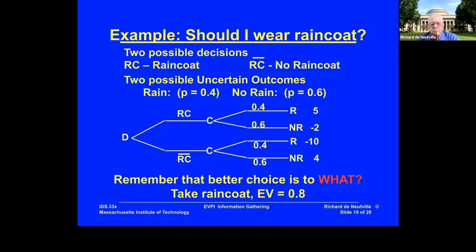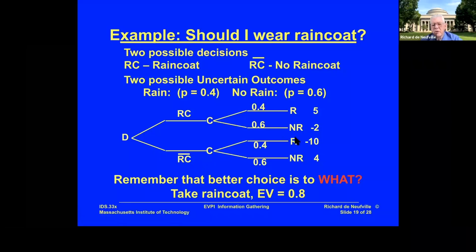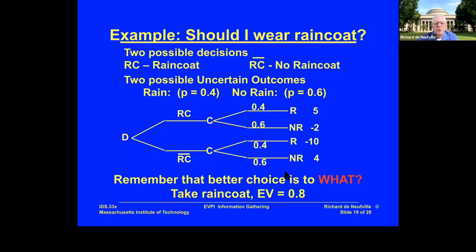Just to set ourselves back in context: what is the better choice? If we take the raincoat — the top decision — we have a 0.4 chance of getting 5, which averages to 2, and a 0.6 chance of getting minus 2, which is minus 1.2. So 2 minus 1.2 is 0.8. Conversely, if I don't take the raincoat, I have a probability of 0.4 of the minus 10 — that's minus 4 — and a probability of 0.6 of four, which is 2.4. That's a negative number, so my best choice is to take the raincoat.